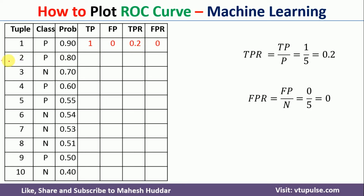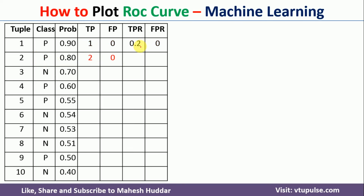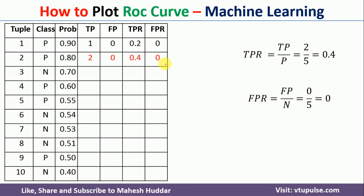Moving to the next tuple, the probability is 0.80, so this will be considered as the threshold. If the probability is 0.80 or more, the example will be classified as positive. Again, this is classified as positive and the example is actually positive, meaning TP is incremented by 1 to become 2 and FP remains 0. TPR = 2/5 = 0.4 and FPR = 0/5 = 0, because there are 5 positive and 5 negative examples.